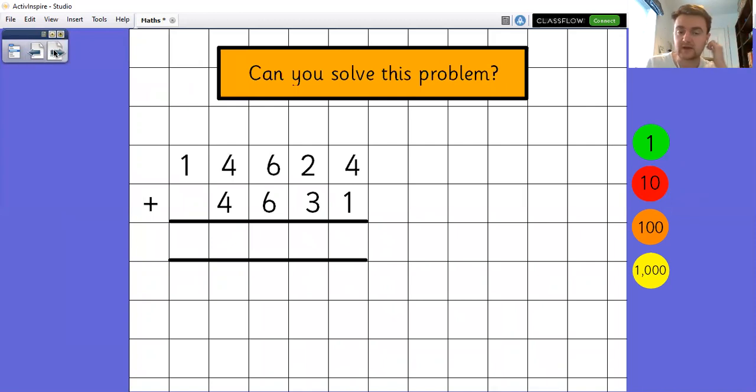So I'll have a go at this one where we've got something in the 10,000s column there as well. Okay, let's have a look together. So I know the 4 plus 1 is 5. 2 plus 3 is 5. 6 plus 6 is 12. So the 2 goes underneath, and the 1 changes over. 4 plus 4 is 8, plus the extra 1 is 9. And 1 plus nothing is 1. We need to remember that this number, although it's invisible there, it doesn't have any 10,000s. So we can still say it's 1 plus nothing.